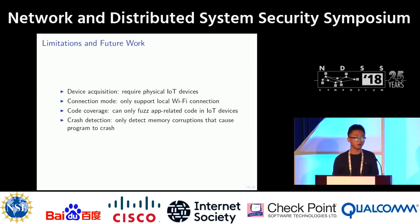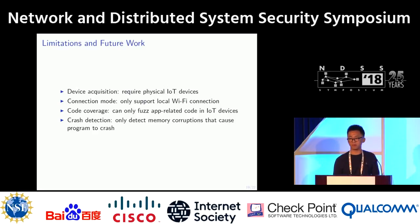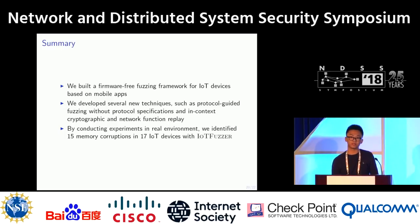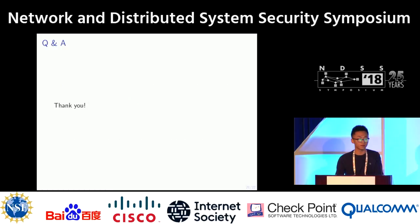There are also some limitations. First, it requires physical IoT devices, which can be expensive, and it only supports local Wi-Fi connection — though we plan to extend this to Bluetooth and ZigBee. Another limitation is limited code coverage: it can only fuzz app-related code in IoT devices. For crash detection, it only detects memory corruptions that actually cause the program to crash. In summary, we built a firmware-free fuzzing framework for IoT devices based on mobile apps, developed protocol-guided fuzzing without protocol specifications, and identified 15 memory corruptions in 17 IoT devices.